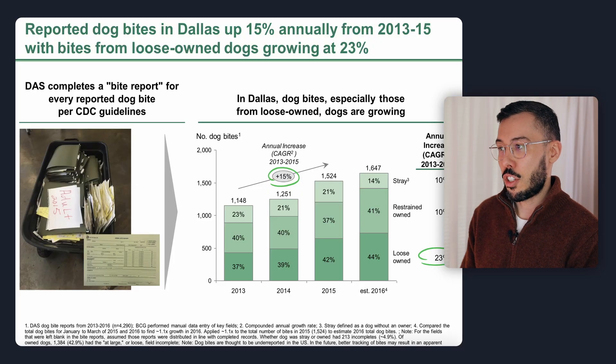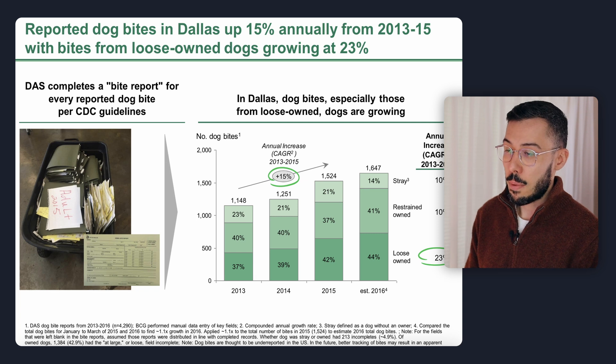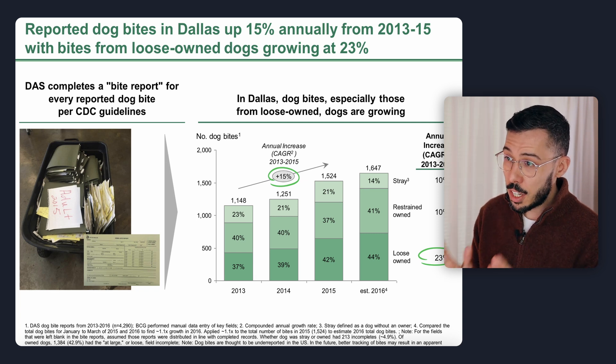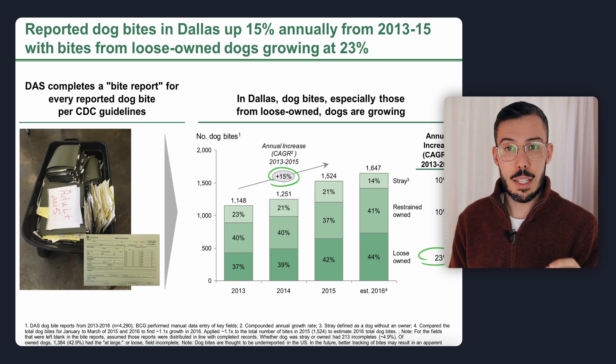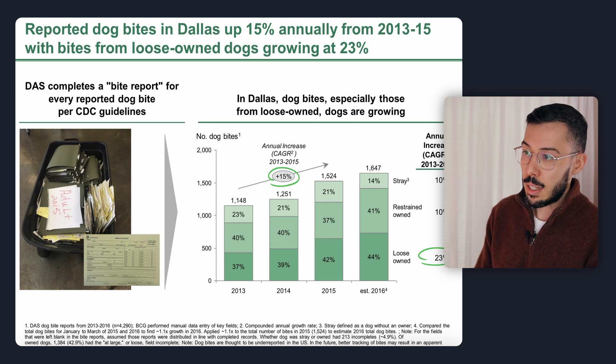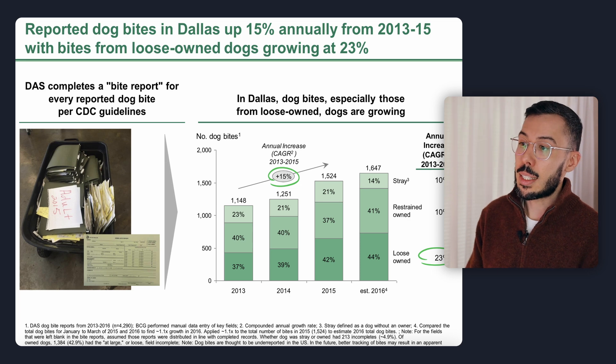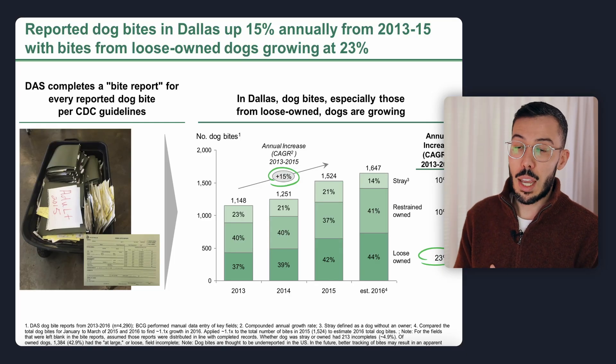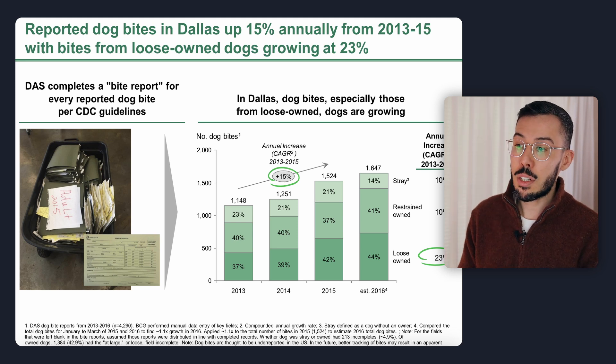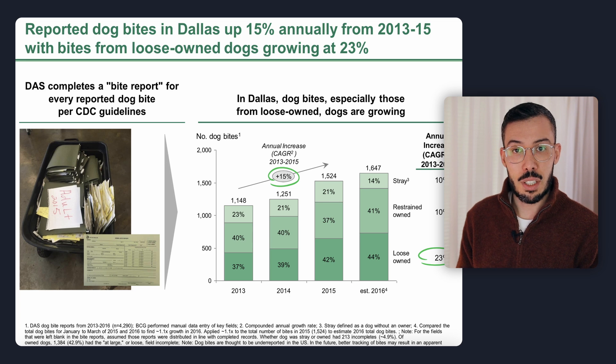This next example is also from BCG, from a project called Loose Dogs in Dallas. On the right-hand side you can see a stacked column chart. They're comparing across different years, and the variable being compared is the number of dog bites, broken down into groups: stray, restrained owned, and loose owned. So in this case the comparison is between years, not between groups. Comparisons are the easiest type of insight to visualize.